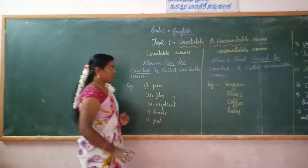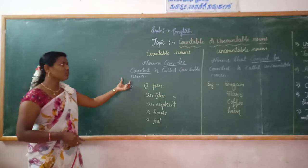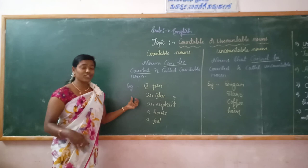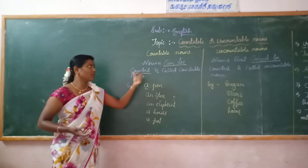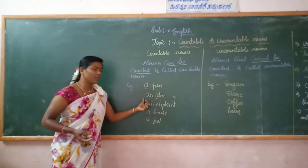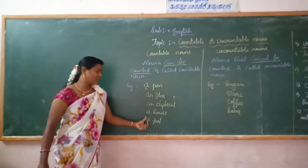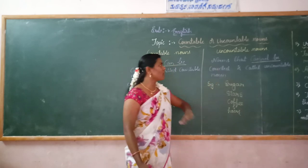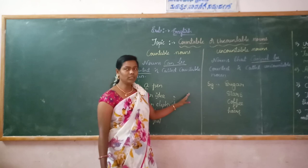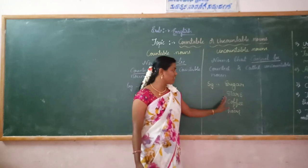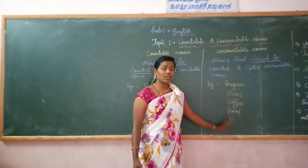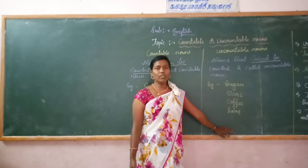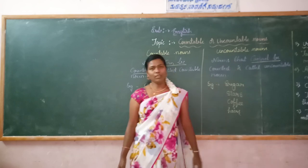So to summarize: Countable and Uncountable Nouns. Nouns that can be counted are called Countable Nouns. Examples: a friend, an idea, an elephant, a house, a fort. Uncountable means nouns that cannot be counted, called Uncountable Nouns. Examples: sugar, stars, coffee, hair. These are all examples of Uncountable Nouns — it is not possible to count them.